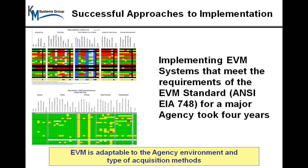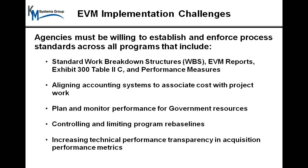That was about four years ago. The after picture is down below. After all the hard work the agency went through to mature and develop their management approach for each of their major programs, it is practically green across the board. Some of the yellow columns are corporate systems — not the responsibility of the program office, but corporate systems, typically the accounting systems, that aren't quite there yet in terms of their ability to support this approach.